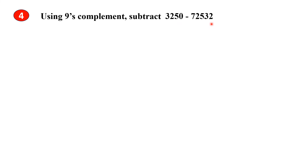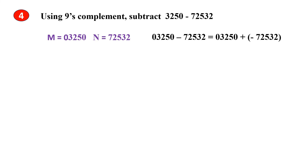Problem 4. Using 9's complement, subtract two decimal numbers. You get M and N. You can rewrite this subtraction sentence as M plus negative N. This is the negative number, so you have to find the 9's complement of it.